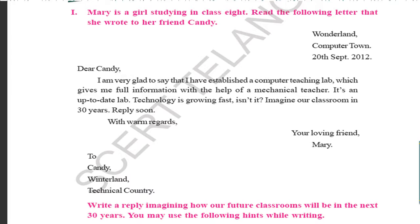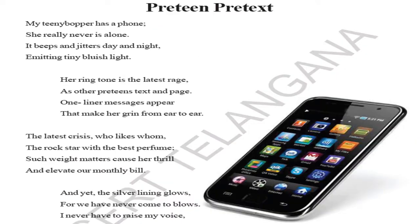Mary is writing to Candy and wants some feedback. Now imagine if you have to write a letter — will you be able to write it, children? Okay. Now Part B of this lesson — the fourth unit is the poem 'Preteen Pretext.'